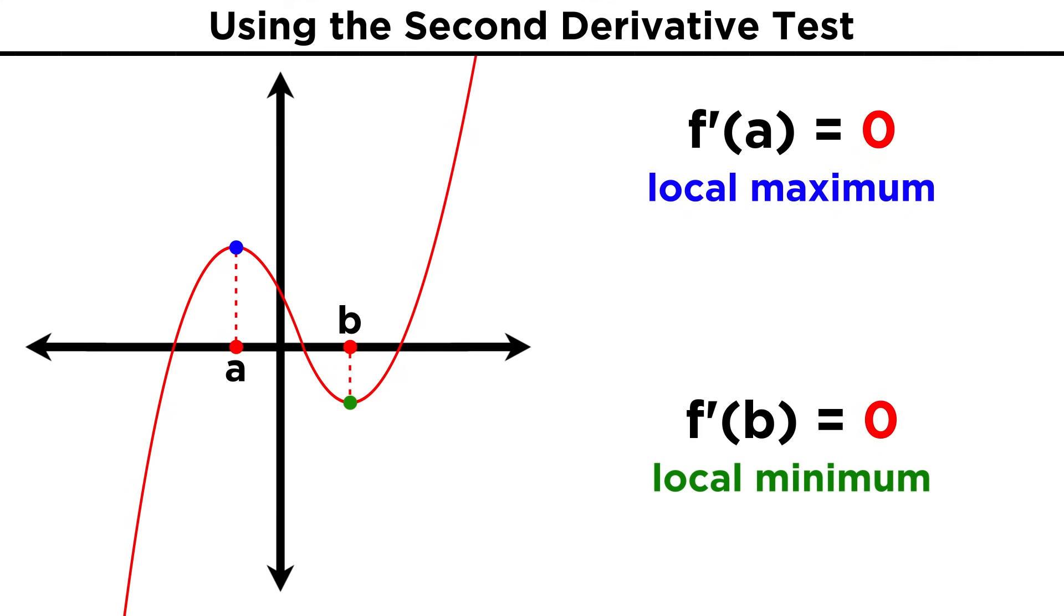So, let's learn something called the second derivative test. Wherever a derivative is equal to zero, we can take the derivative again to get the second derivative. If the second derivative is positive at that value, then the point is a local minimum, because that part of the curve must be concave up. If instead the second derivative is negative at that value, the point is a local maximum, because that part of the curve must be concave down.